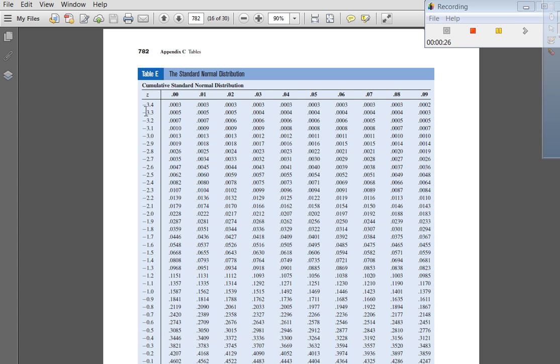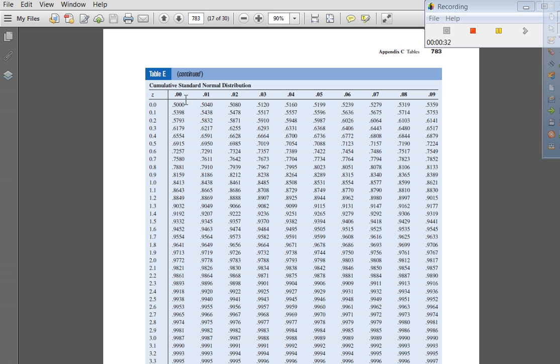You can see here that the Z-scores are negative all the way down. And it also has a positive side. And the positive side is going to show all of your positive Z-scores.